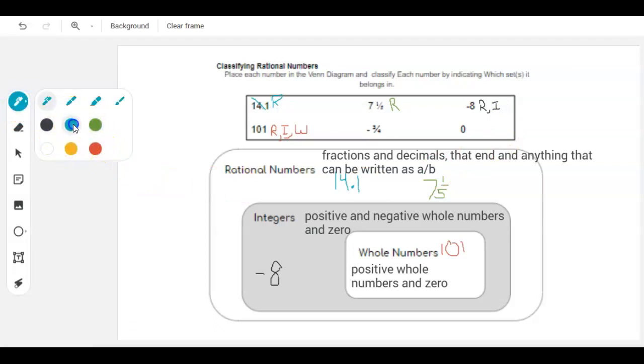What's next? I guess we'll go back to blue. I got this negative three-fourths. Well, it's written as A over B, so we know it's here. Is it a positive or negative whole number or zero? It is not. So, it's got to stay out here. Out here in the rational numbers, where they're only rational, is where you put your decimals and your fractions. And, zero. Well, it's a rational number. I can write it as A over B. Is it a positive or negative whole number and zero? It is zero. It is zero. So, it's actually going to go in here. And, it is a rational number, an integer, and a whole number.